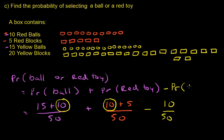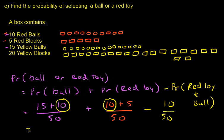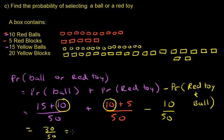We need to subtract off the probability of being both a red toy and a ball, because red balls got counted in twice — included in the ball probability and in the red toy probability. Subtracting it off once leaves just one of the 10s. So: 15 plus 10 plus 10 plus 5 minus 10 equals 30 out of 50, which is 0.6.